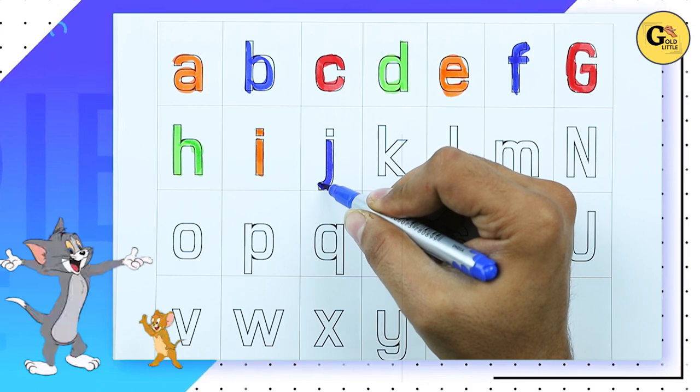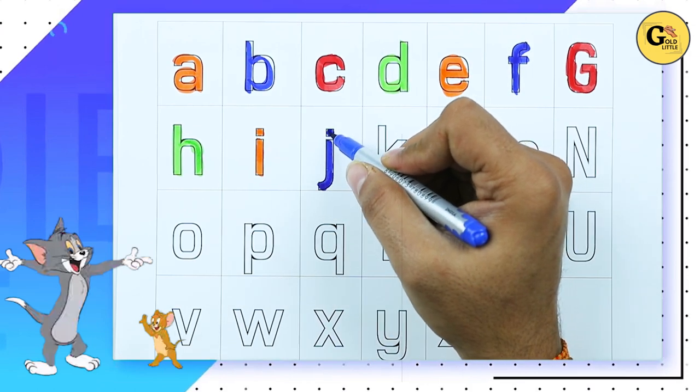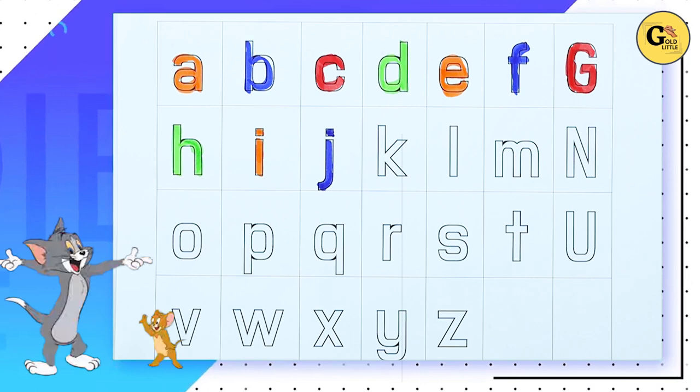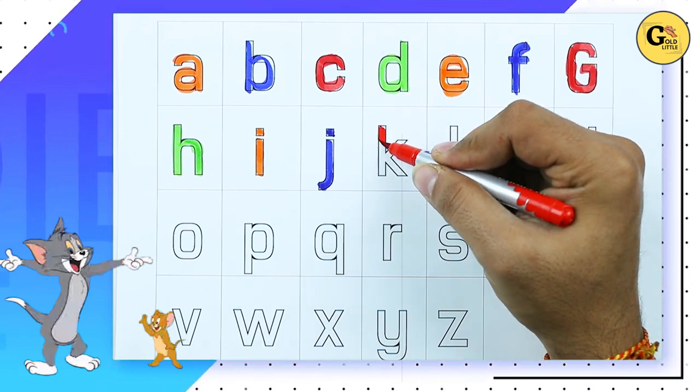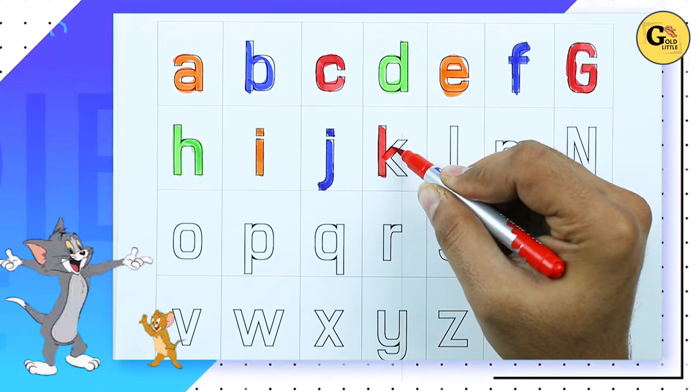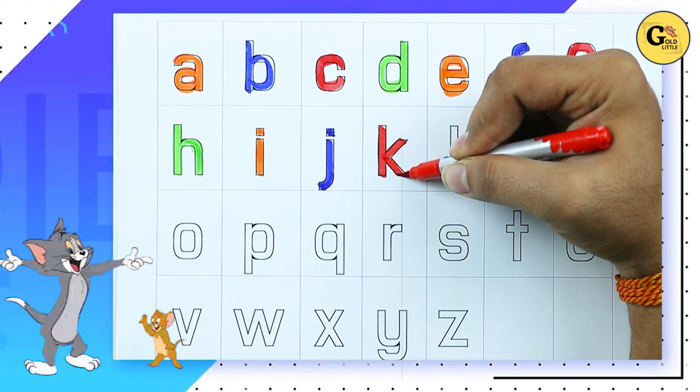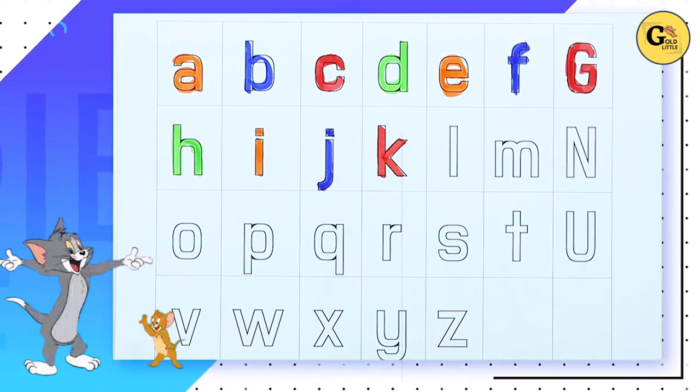J for Jug. It's small J. K. K for kite. It's K. K for kite.